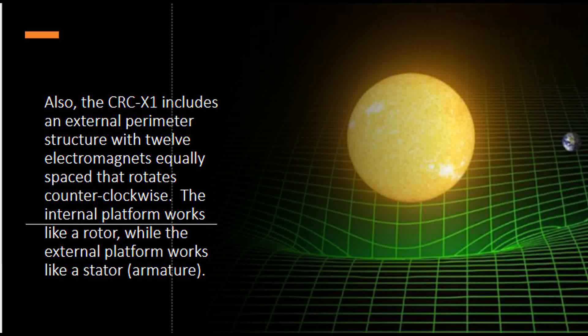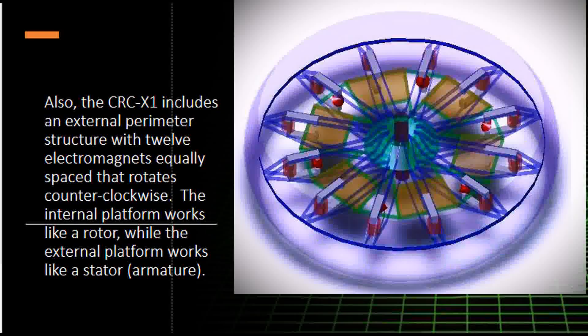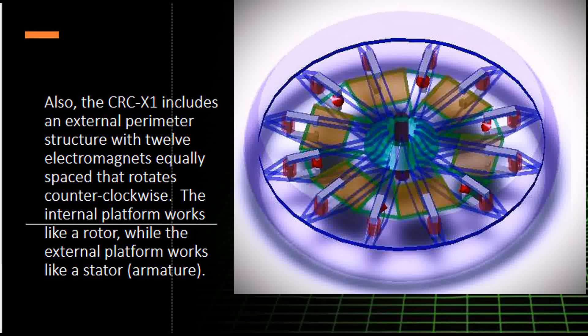Also, the CRC-X1 includes an external perimeter structure with 12 electromagnets equally spaced that rotates counterclockwise. The internal platform works like a rotor, while the external platform works like a stator armature.